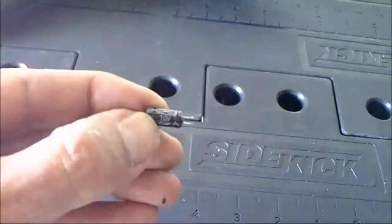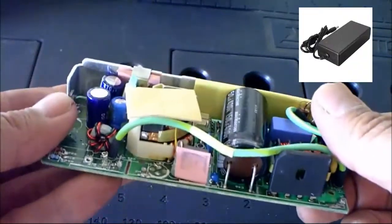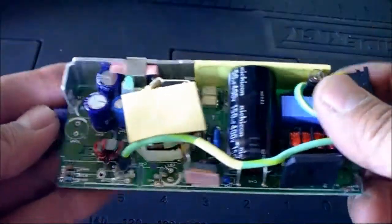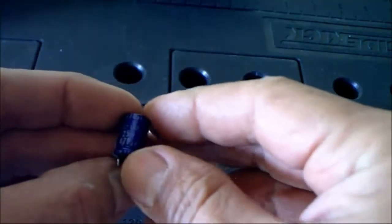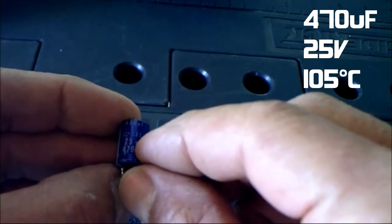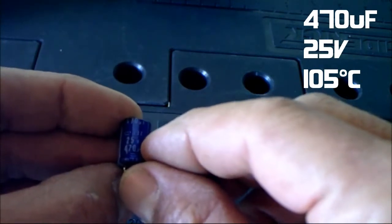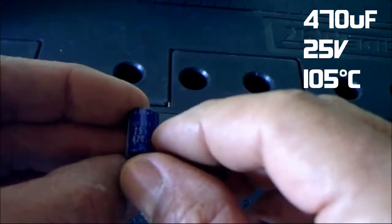I grabbed my capacitor off this old power supply for a computer. When I took it out the rating is still the same - it's 470 microfarad, but it takes 25 volts. That means the maximum it could take is up to 25 volts before it explodes, so this one is actually better because the other one was only 10 volts.